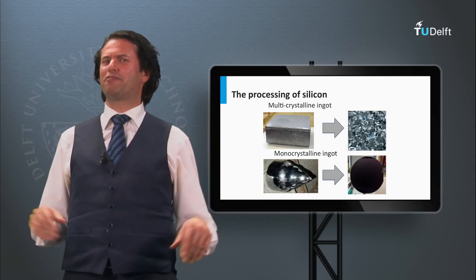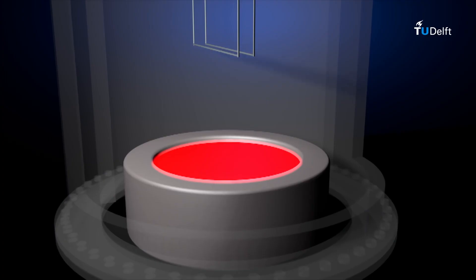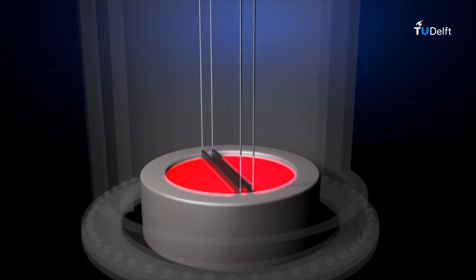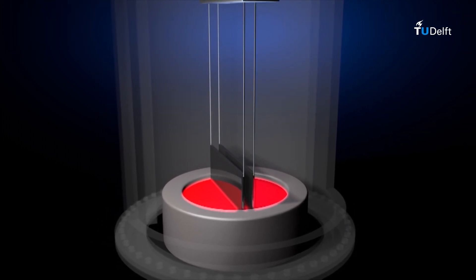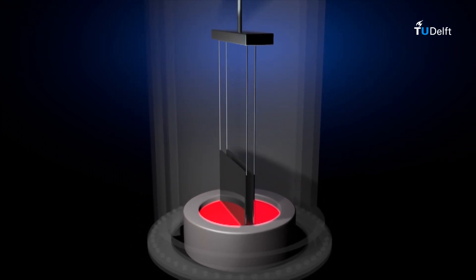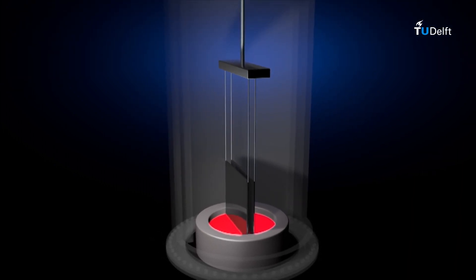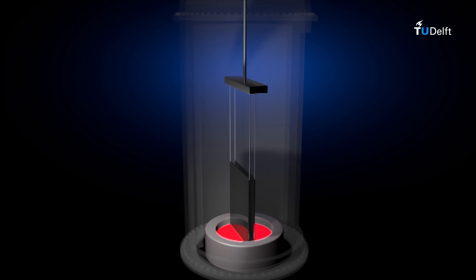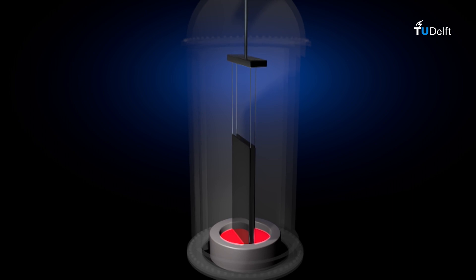Silicon ribbon is a completely different approach to making wafers. It does not face the problem of kerf losses because it does not include a sawing step. Silicon ribbon is based on a high-temperature-resistant string which is pulled up from a silicon melt. The silicon solidifies on the string and a sheet of crystalline silicon is pulled out of the melt. The ribbon is then cut into wafers, and the surface is further treated before they are processed into solar cells.